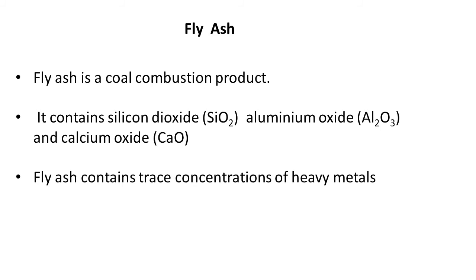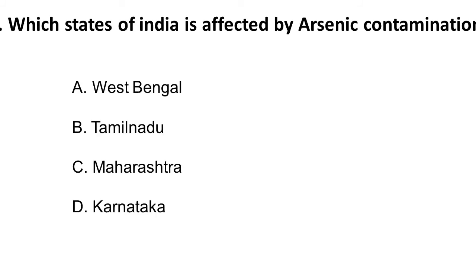Next question: Which state of India is most affected by arsenic contamination? This is an important question. Options are: A) West Bengal, B) Tamil Nadu, C) Maharashtra, D) Karnataka. The main source of arsenic contamination in India is pesticides.